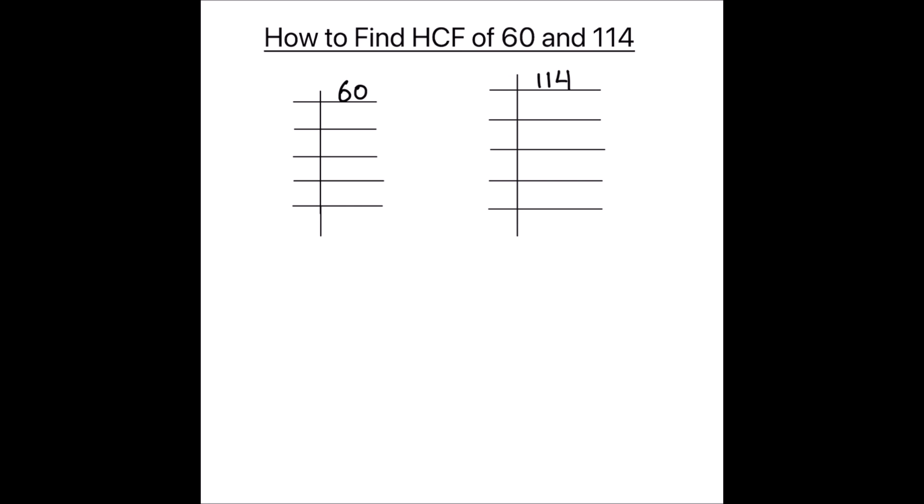In prime factorization method, we divide numbers using prime numbers and find the common factors of the number. So let's start by finding the factors of 60 and then we will find the factors of 114.